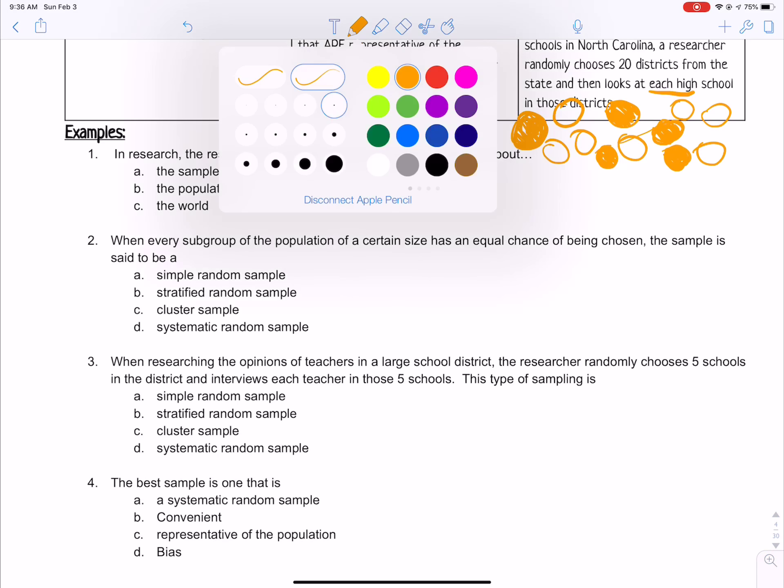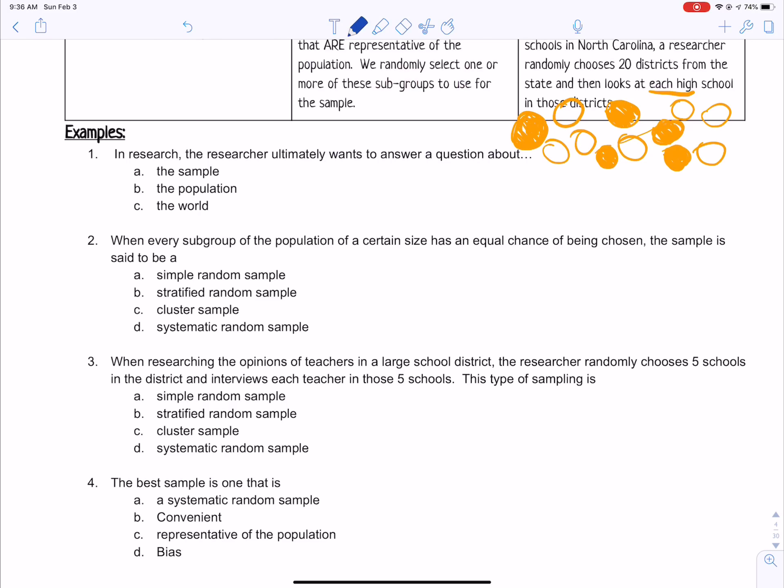In research, the researcher ultimately wants to answer a question about a population. When every subgroup of the population of a certain size has an equal chance of being chosen, the sample is said to be a simple random sample.